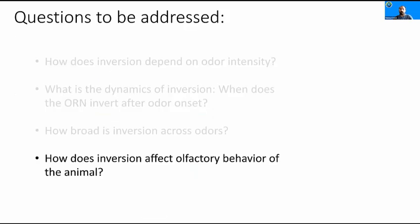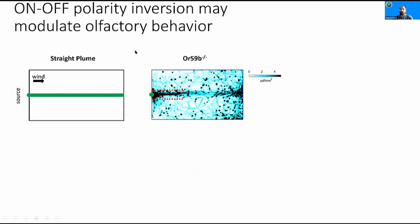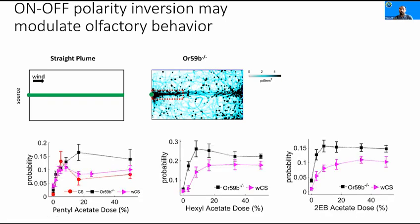We then asked if this inversion phenomenon could affect the behavior of the flies. To answer this, we created a straight plume by releasing odorant in a laminar wind, then recorded the behavior of the animals in this arena, and calculated how much they accumulate around the plume and the source, used as a measure of attraction. With the inverting receptor deleted, flies were more attracted to the odorants compared to wild-type flies with intact inverting neurons, suggesting that inversion could actually modulate behavior.